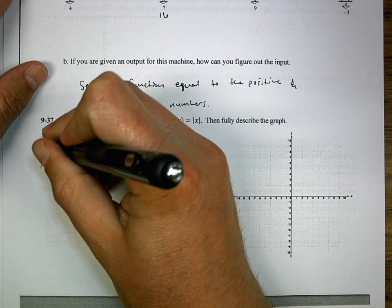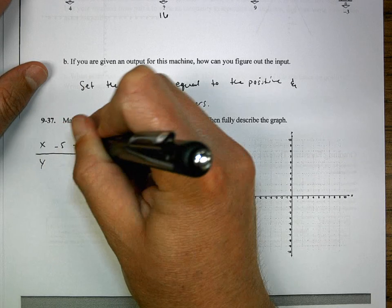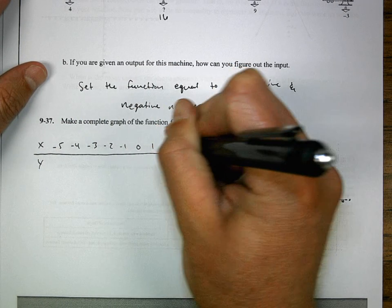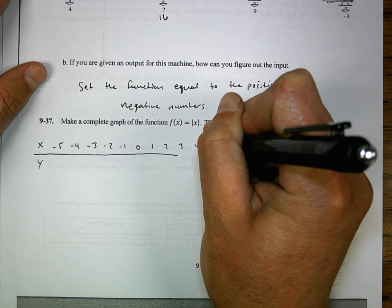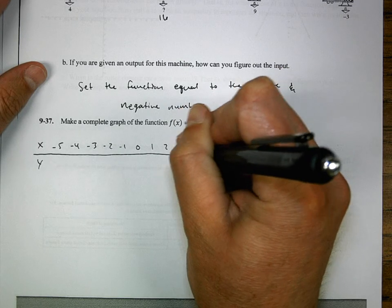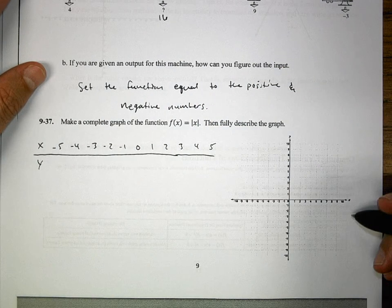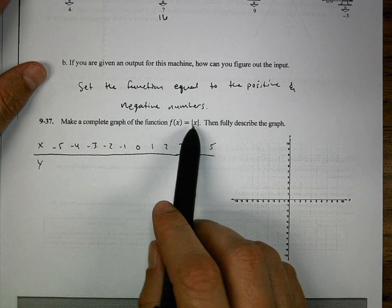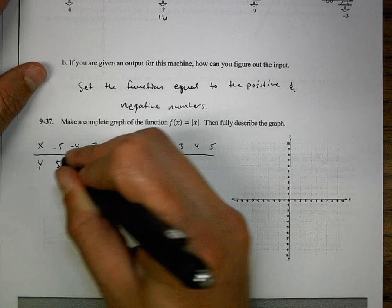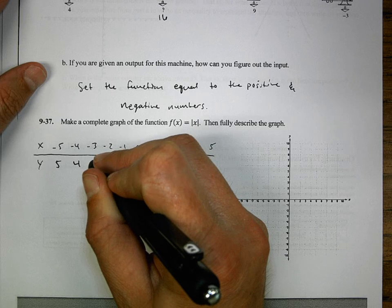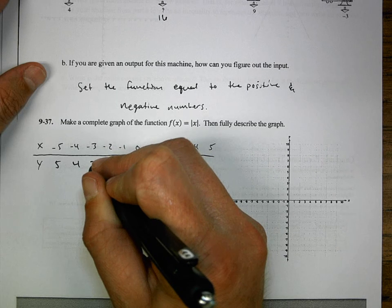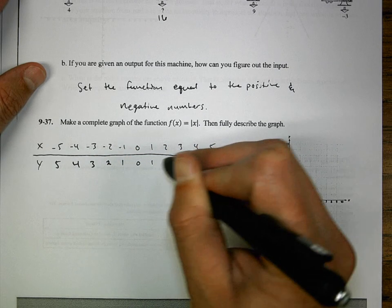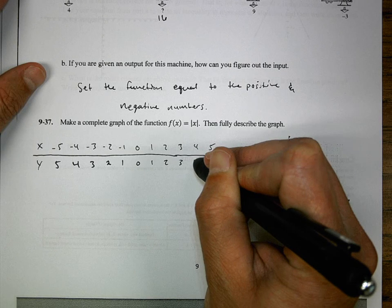I'll plug in the numbers negative 5, negative 4, negative 3, negative 2, negative 1, 0, 1, 2, 3, 4, and 5. So if you plug in negative 5, we get a positive 5 out. Same thing with negative 4, negative 3, negative 2, and negative 1. These would be all of our outputs.